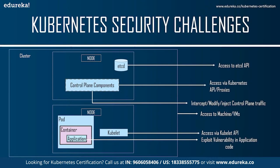The diagram on screen shows vulnerabilities and security risks in a Kubernetes cluster: easy access to the etcd API, access via the Kubernetes API or proxies, interception or modification of control plane traffic, access to machines or VMs, access via the kubelet API, and exploitation of vulnerabilities in application code. All of these can cause a great deal of data loss or information leakage from your organization.